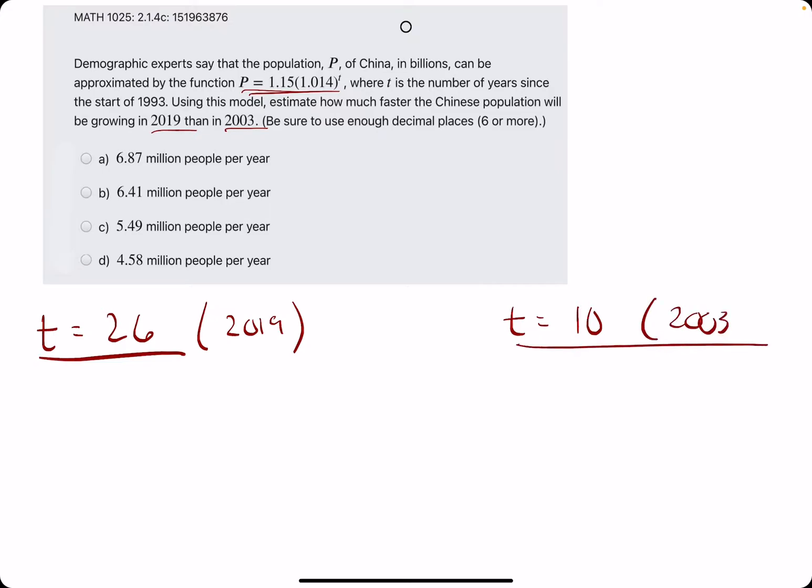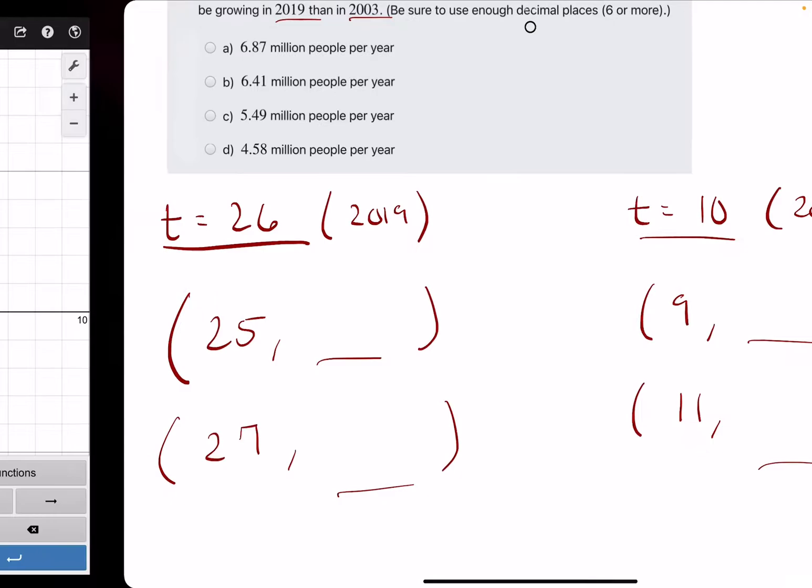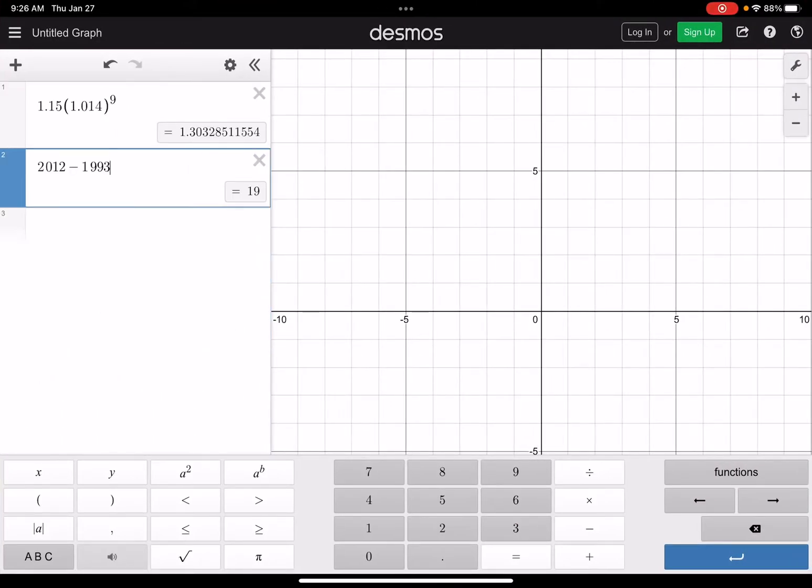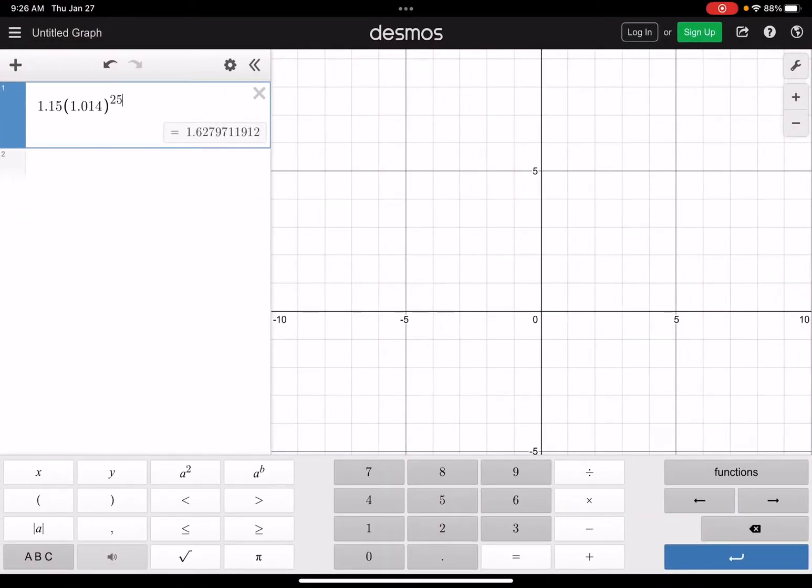This will represent 2003. Now we want to pick t values to the left and to the right. So to the left would be 25, to the right would be 27. Same thing here: 9 to the left and 11 to the right. We want to find the population at each of these time values, so we're going to change this around. We want 25 and 27.